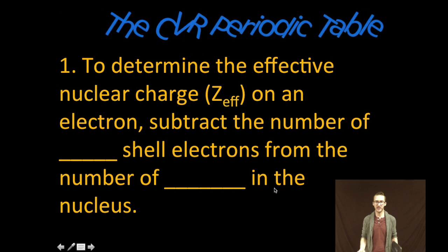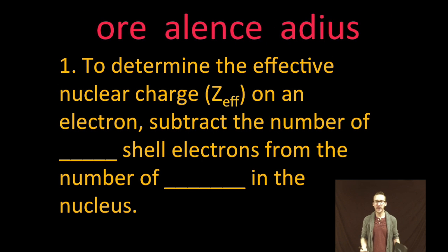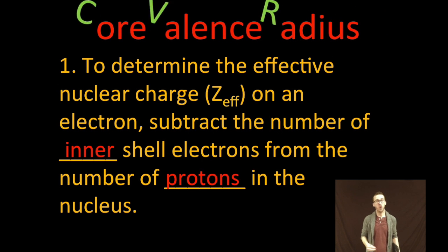Now how do we determine what that charge is? Well, to determine the effective nuclear charge, or effective core charge, sometimes represented as Z-eff on an electron, simply subtract the number of inner shell electrons from the number of protons in the nucleus.